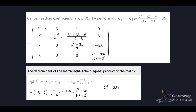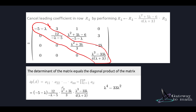The operation on R4 is R4 minus (lambda squared plus 5 lambda minus 6) / (4 times (lambda plus 3)) times R3. The new R4 equals: 0, 0, 0, (lambda cubed minus 33 lambda) / (4 times (lambda plus 3)). We've now brought the matrix into triangular form. When a matrix is in triangular form, the determinant equals the product of the diagonal entries: (minus 5 minus lambda) times (12 / (minus lambda minus 5)) times (lambda squared plus 3 lambda) / 3 times (lambda cubed minus 33 lambda) / (4 times (lambda plus 3)).